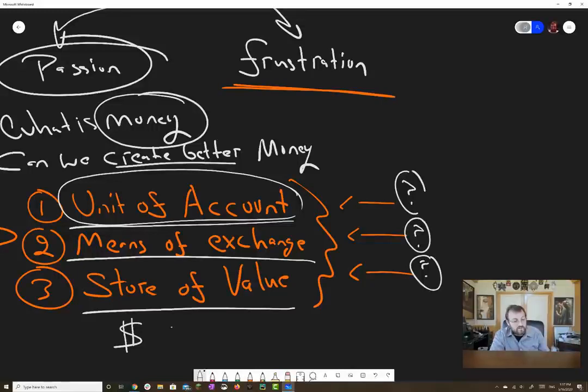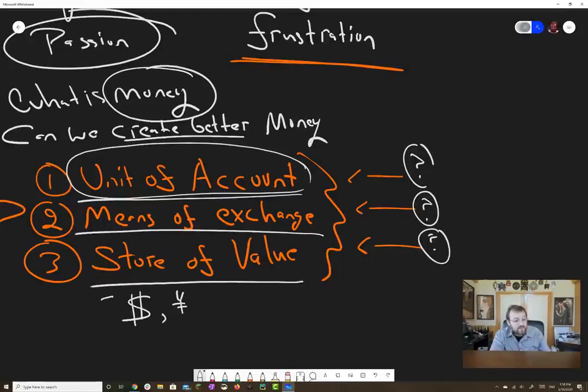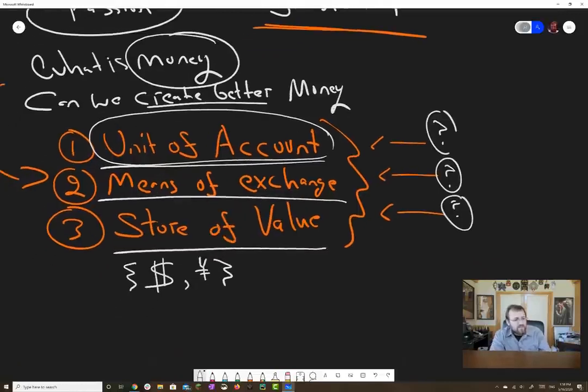So store of value is this concept of the durability of value over a period of time. And does it hold it? Does it lose it? So these are the three fundamental properties that anything that aspires to be money must have. And every sovereign currency, whether it be the U.S. dollar or the yen or some other currency, has these properties, at least arguably has these properties. And for the most part, they allow a sustainable, stable economy to form.